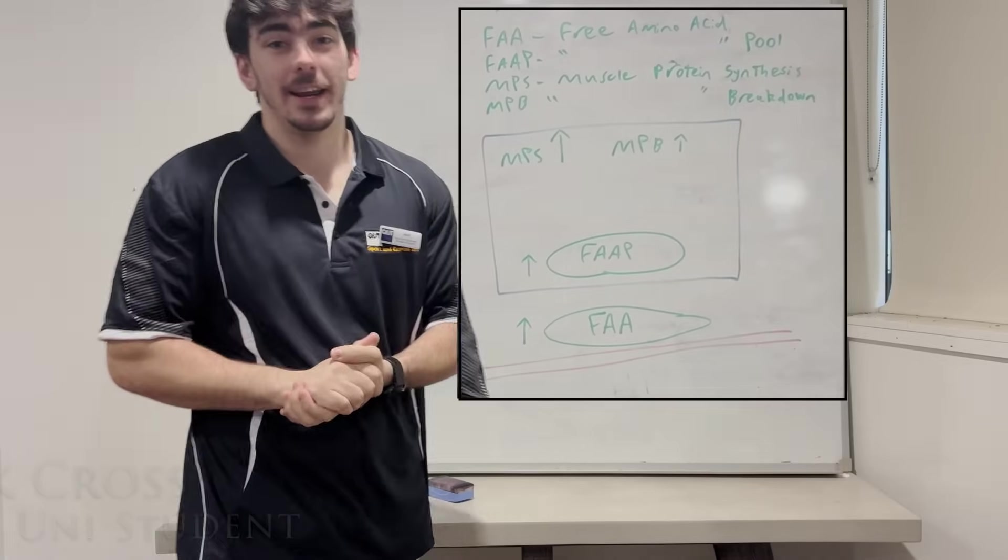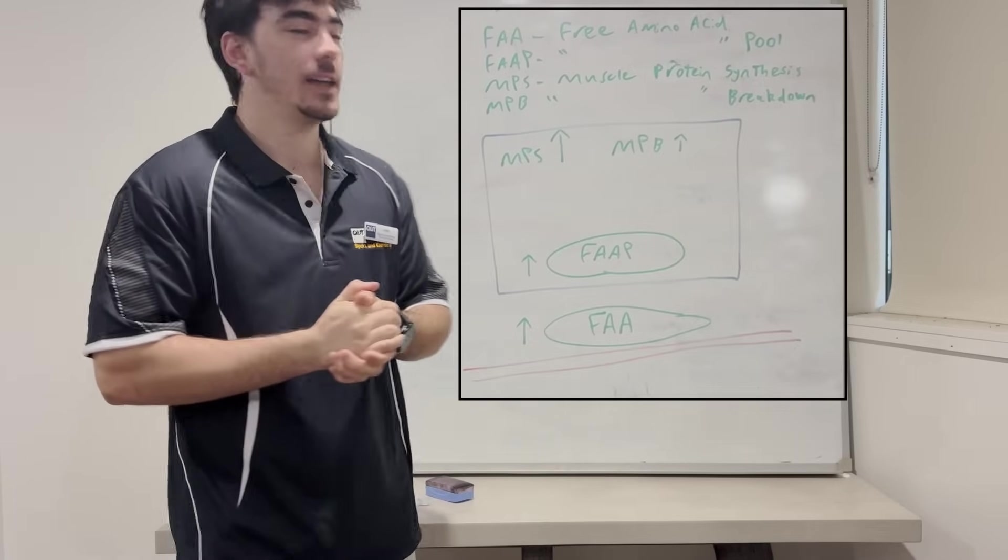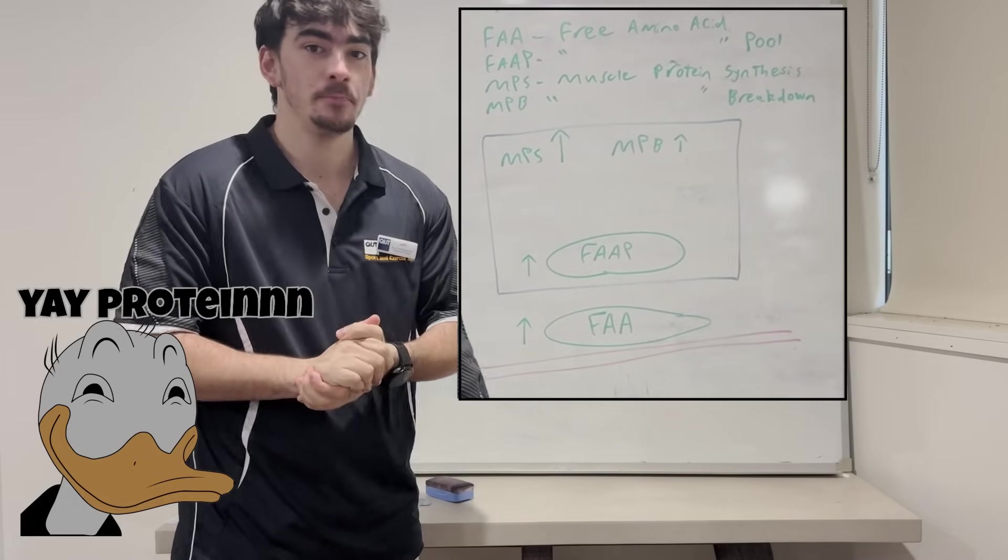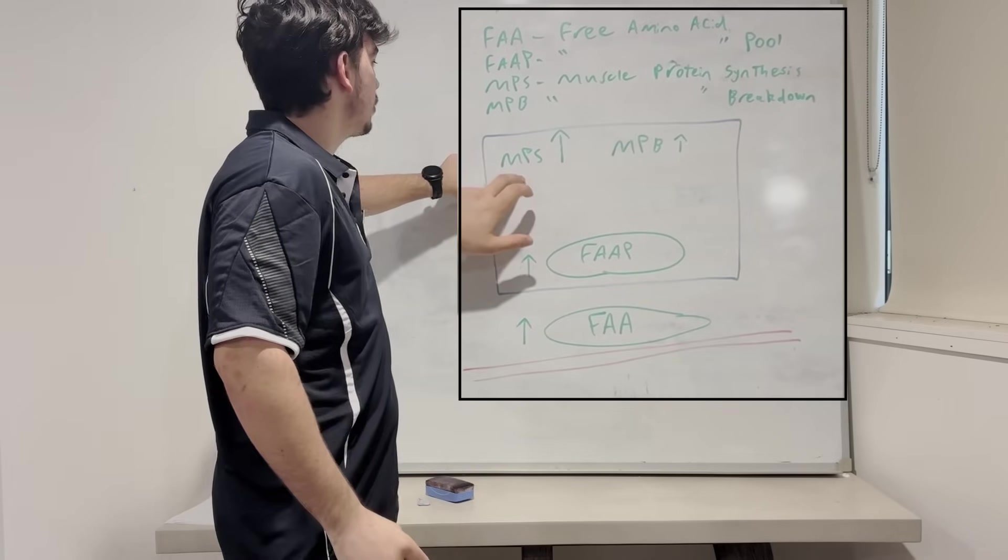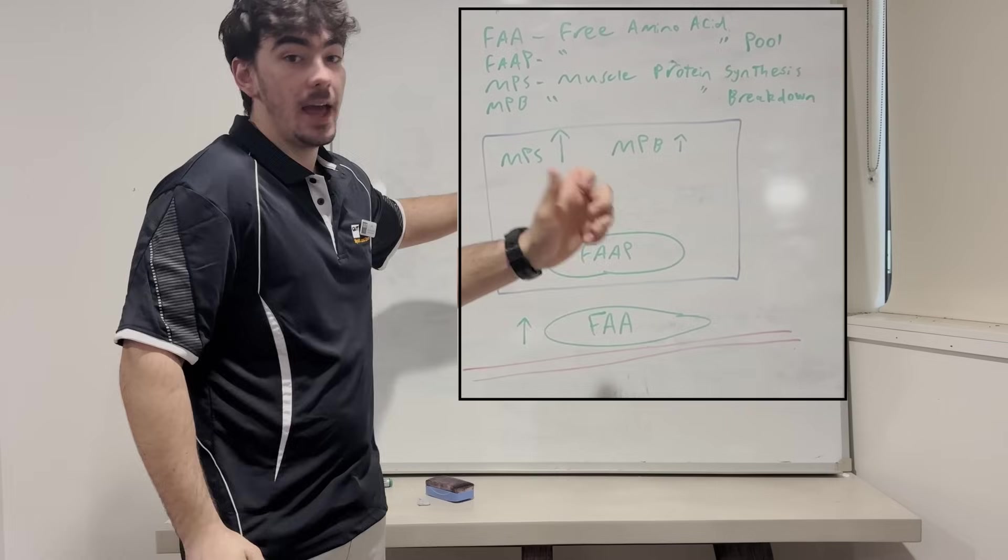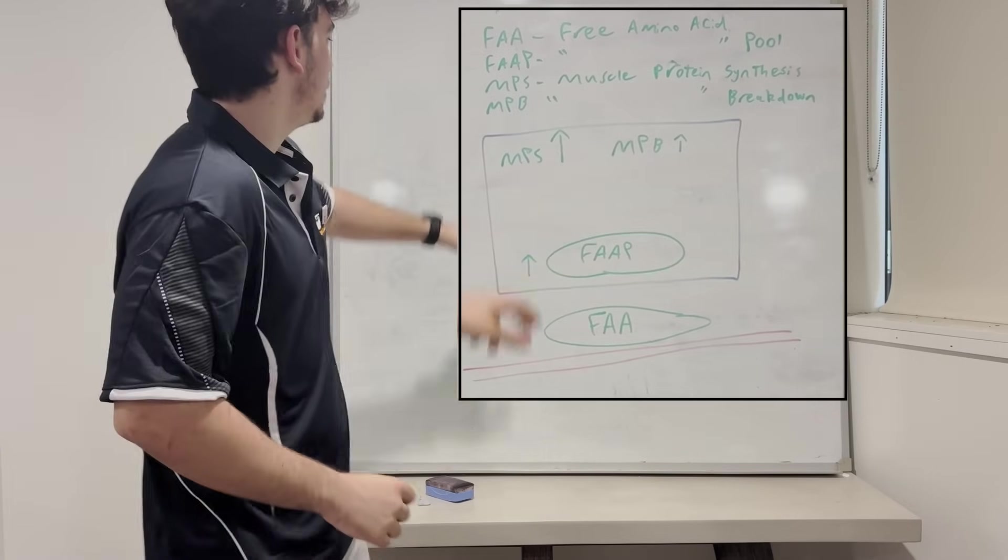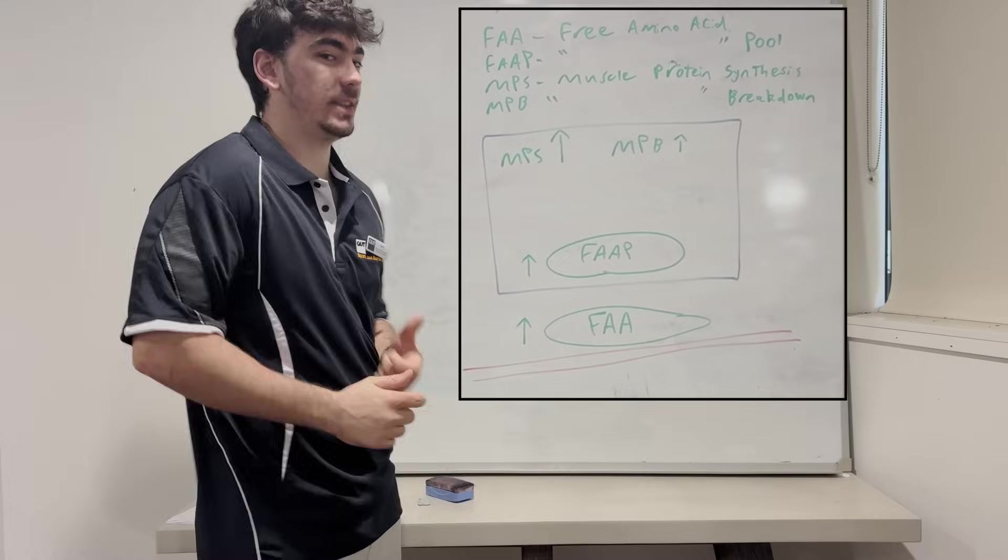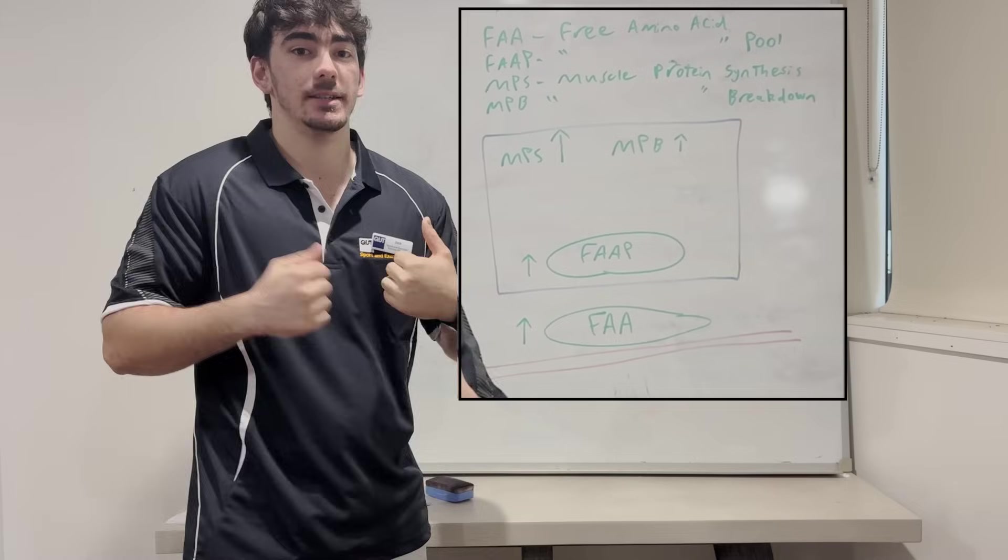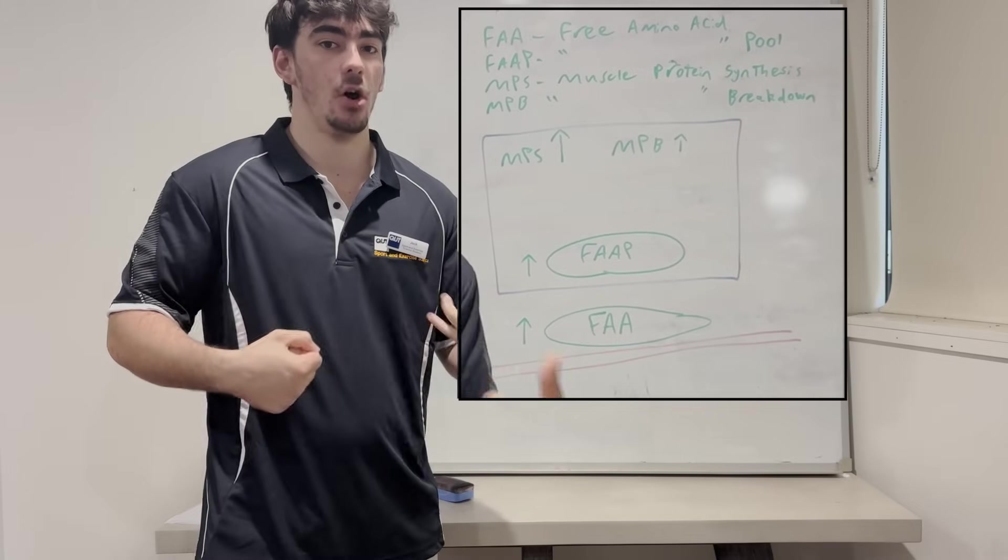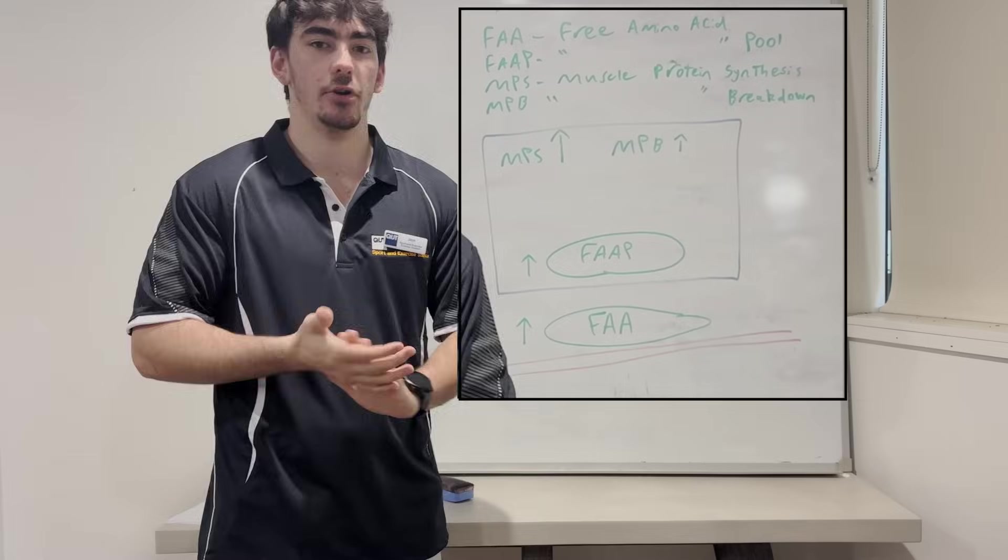One of the most fascinating adaptations acute-wise that we can see from resistance training is this idea of protein turnover. So basically how that's going to work is we're going to have an increased rate of muscle protein synthesis and also an increased rate in muscle protein breakdown. So you can see here by the two arrows that this rate of synthesis is a bit higher than the rate of breakdown and that's important because breakdown is simply just breaking down old proteins and synthesis is like replacing it with newer, stronger, better proteins.